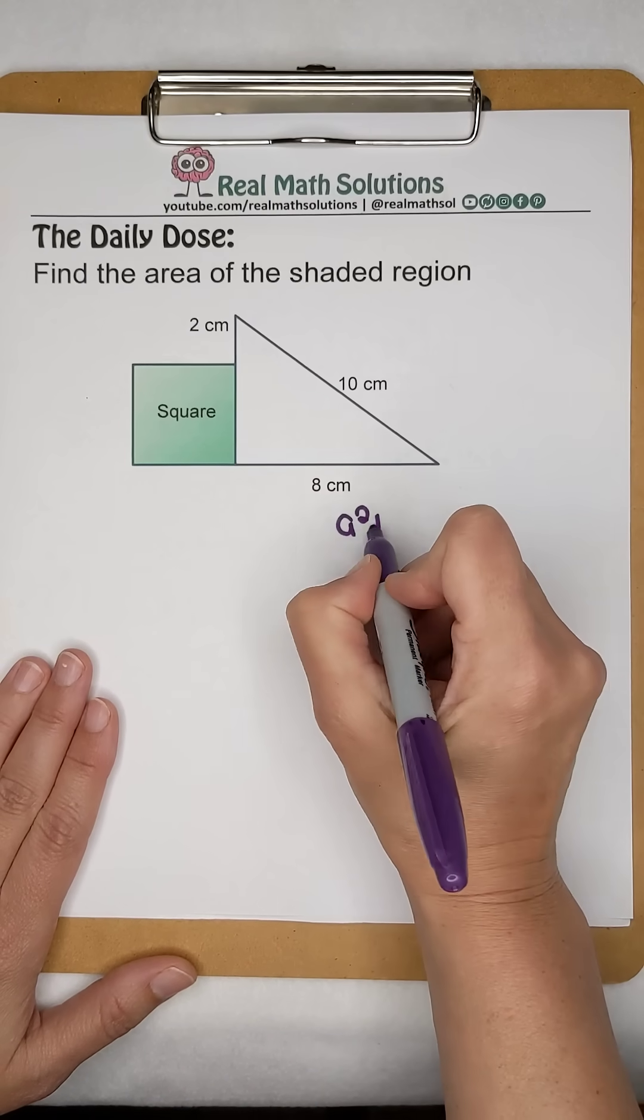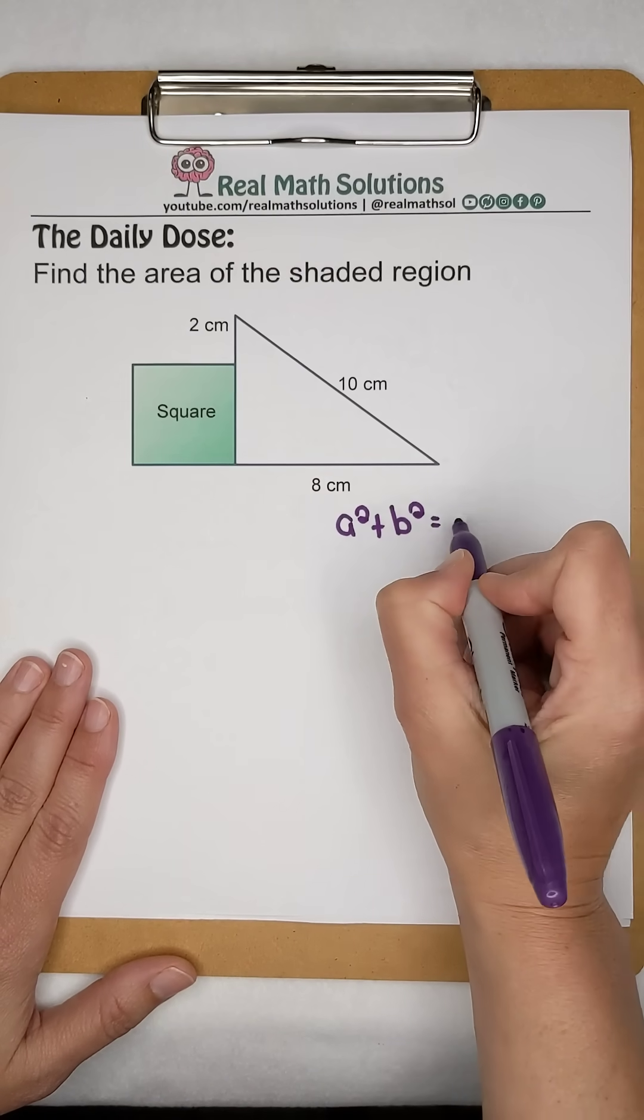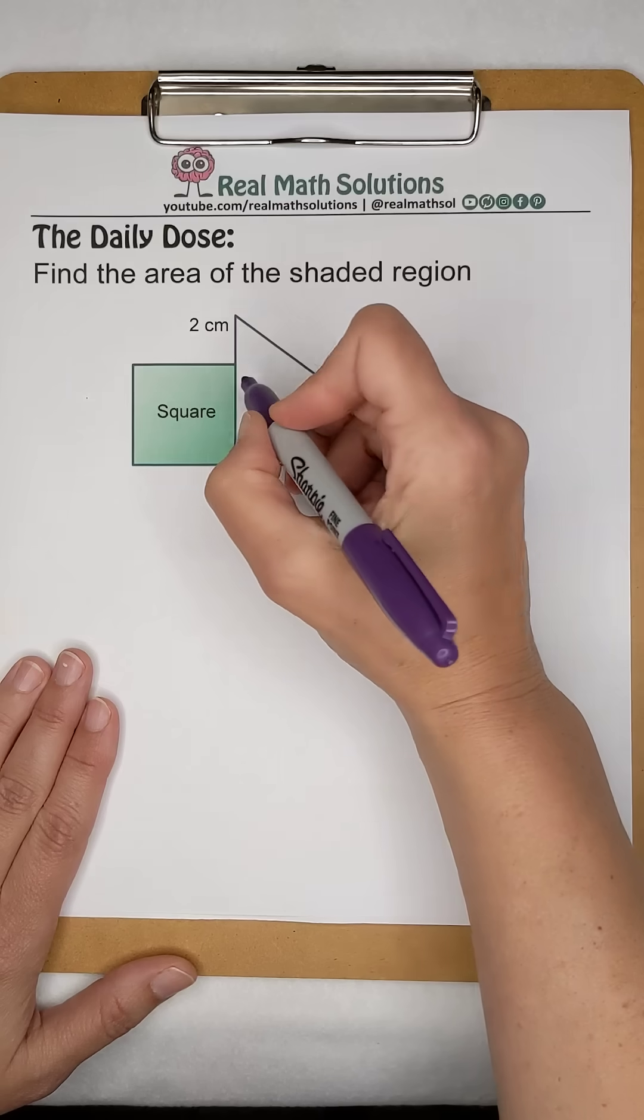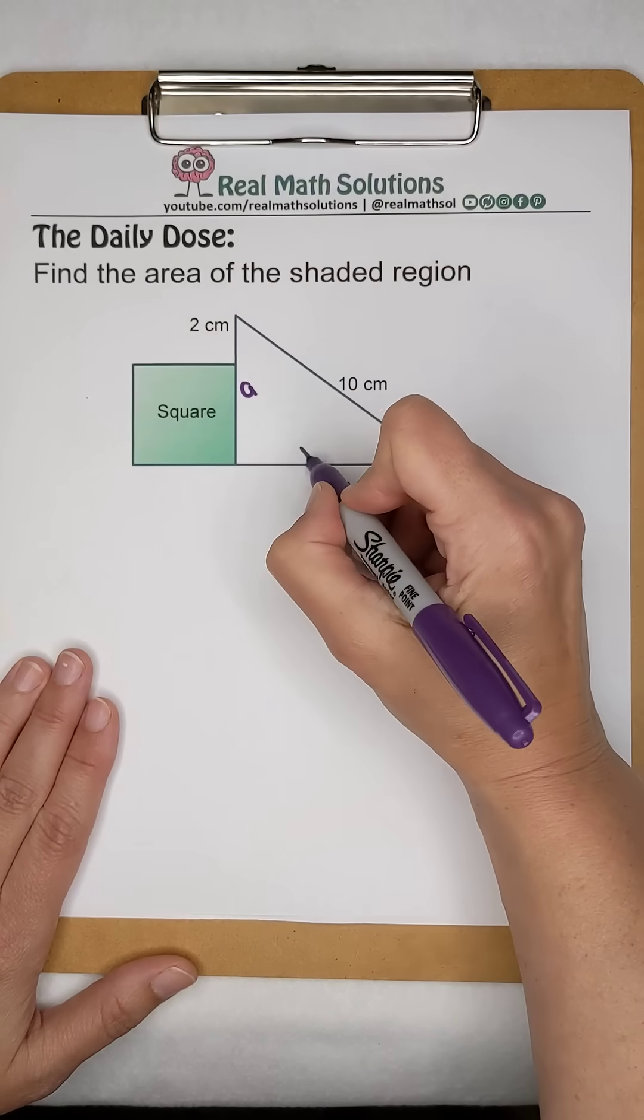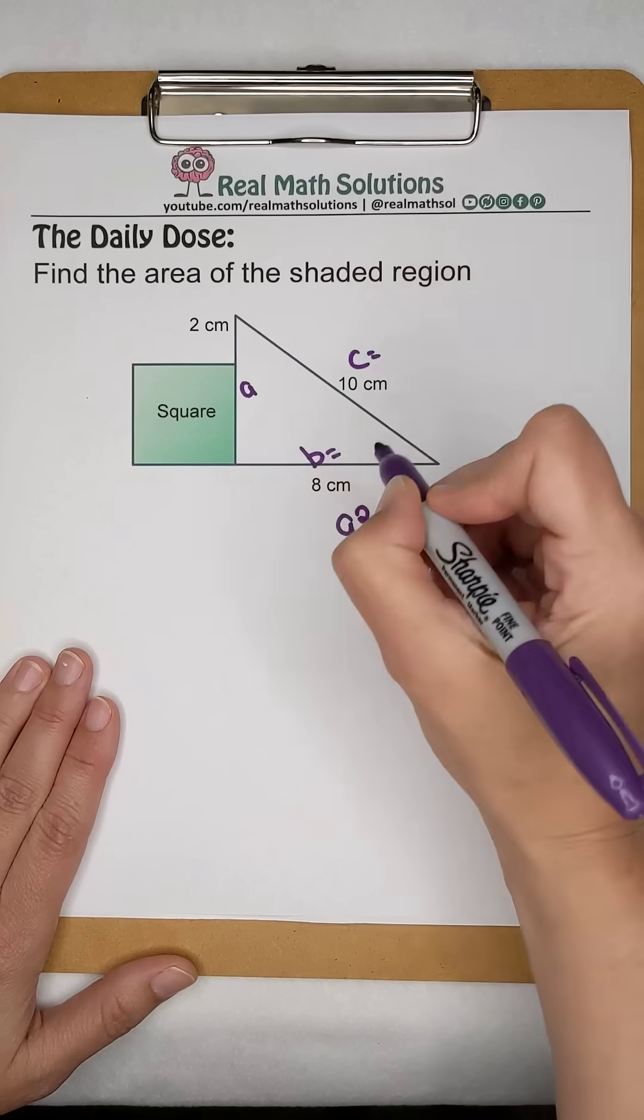Which means to find our missing side length, we can use the Pythagorean theorem. a² + b² = c². Let's assume our missing edge is a, 8 is b, and 10 is c.